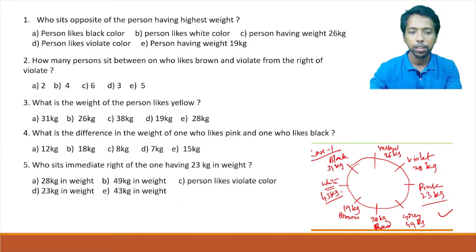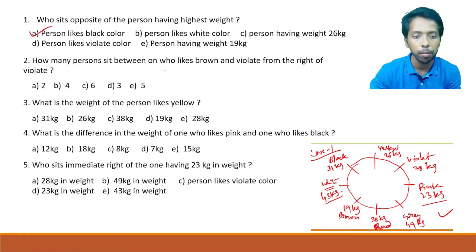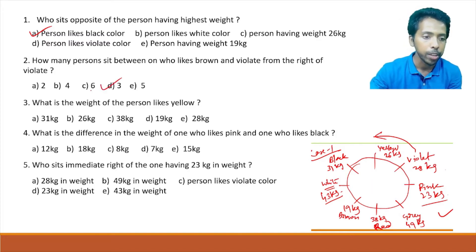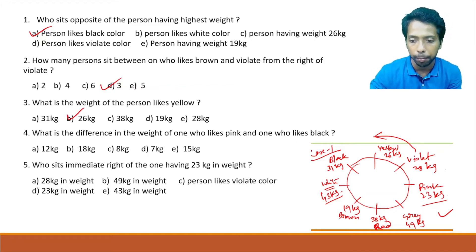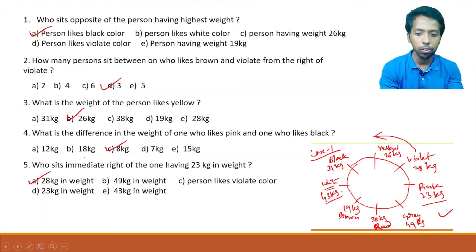Question one: who sits opposite the person with the heaviest weight? Heaviest is gray at 49 kg, so the answer is black at 31 kg. How many persons sit between the one who likes brown and violet, from the right of violet? Counting: one, two, three — answer is three persons, option D. What is the weight of the person who likes yellow? 26 kg. Difference between pink and black weights: 23 and 31 is 8 kg, option C. Immediate right of the one with 23 kg is violet at 28 kg.